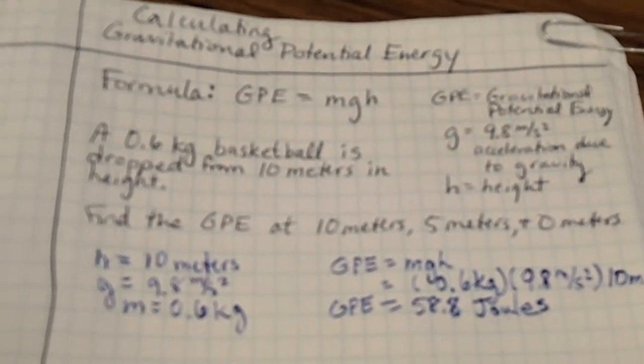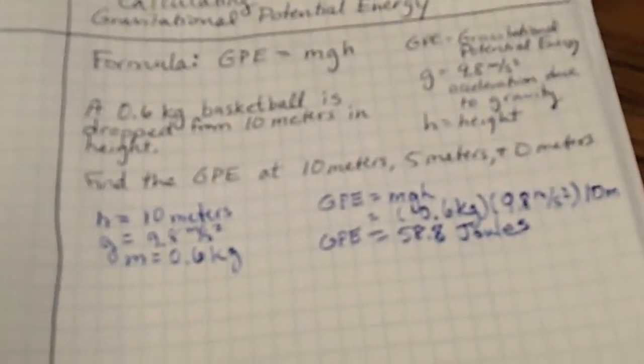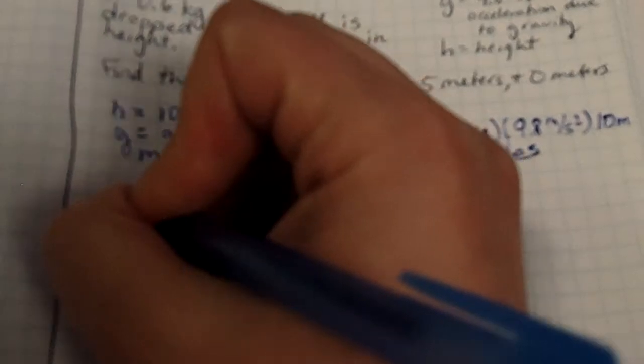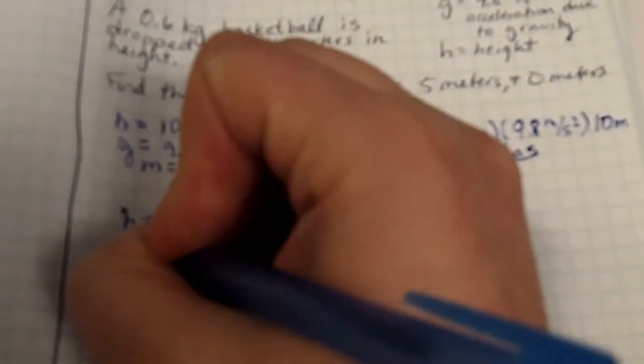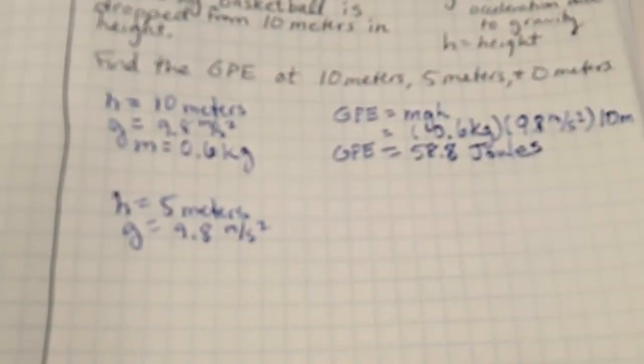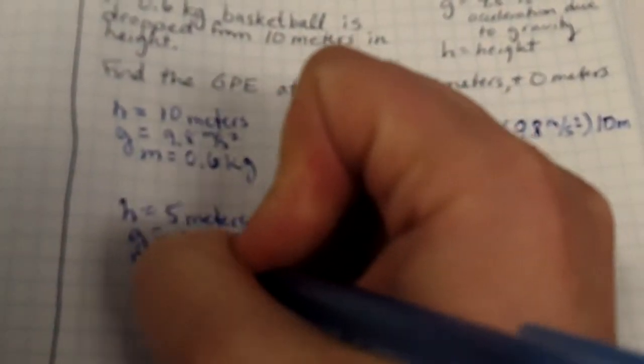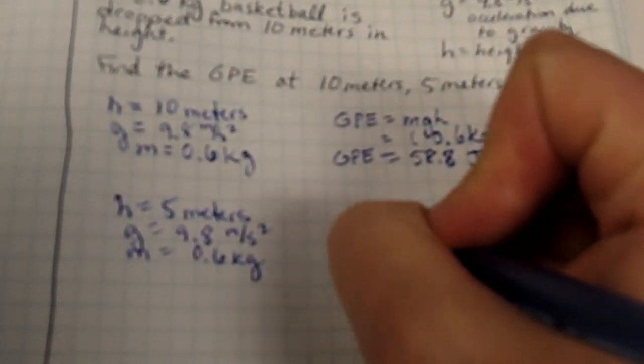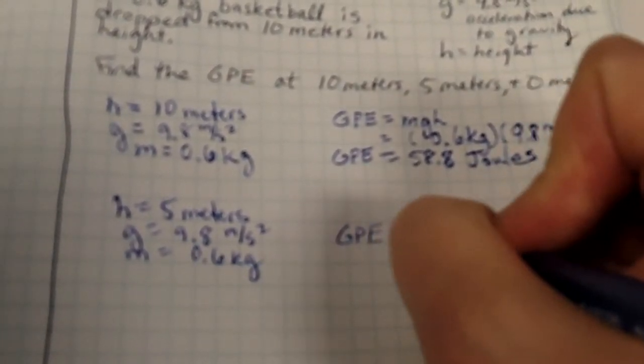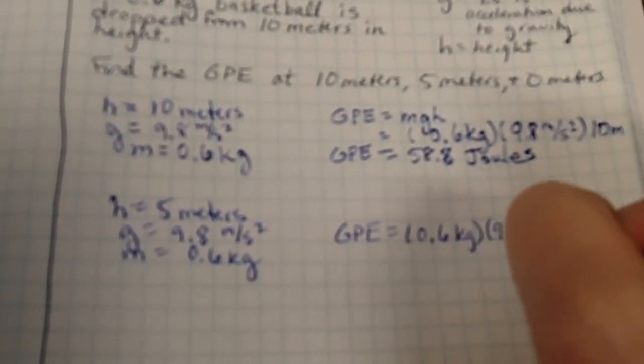Now what's going to happen when our basketball drops to 5 meters. So let's take a look at this. So instead now our height is 5 meters. We have still our G is 9.8 meters per second squared. Again the acceleration due to gravity. We have M is 0.6 kilograms.